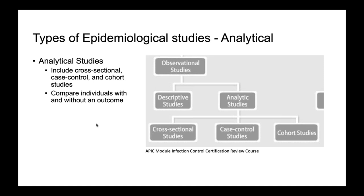Types of epidemiological studies — you've got analytical here. As you can see, you've got observational right at the very top. This splits off into your descriptive and your analytic studies. Your analytical studies include these three: cross-sectional, case control, and cohort studies. This is from the APIC module of infection control certification review course, which is a great course. It's important for you to remember these three specifically — your cross-sectional, your case control, and your cohort studies — and that you start finding ways to put them into their own individual buckets.